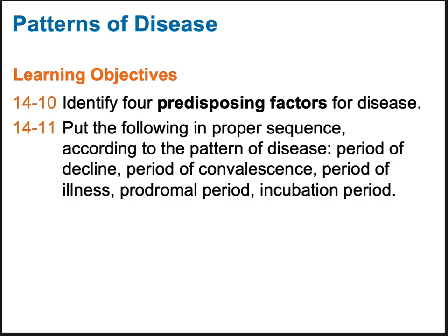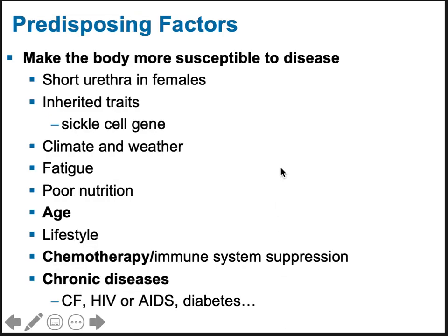Welcome to part two of chapter 14/15. We're going to look at patterns of disease and then go into epidemiology. There are things called predisposing factors — different factors that make a person more susceptible to becoming infected and experiencing disease.